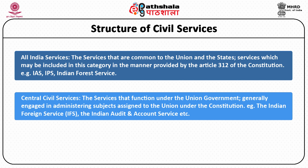The second category of services is the Central Civil Services. The officers of the Central Civil Services cater to the subjects included in the Union List, so they are officers of the Union Government. For example, the officers of Indian Audit and Account Services, Indian Foreign Service — these officers work under the exclusive control and domain of the Union Government.